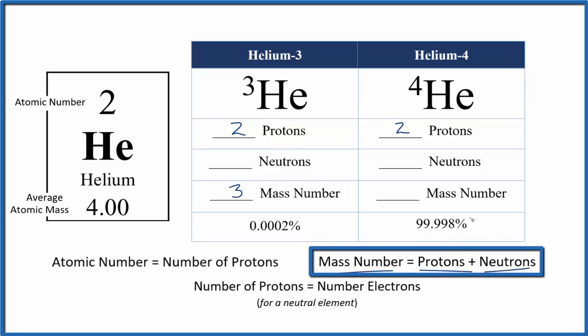So if we had 2 plus 1, that would give us a mass number of 3. So helium 3 has just one neutron. For helium 4, we know the mass number is 4.